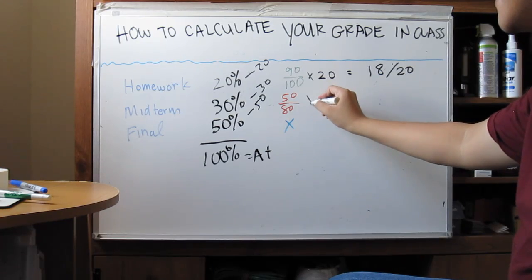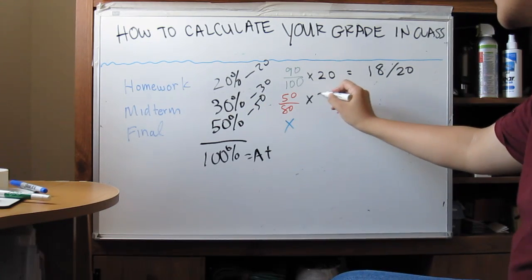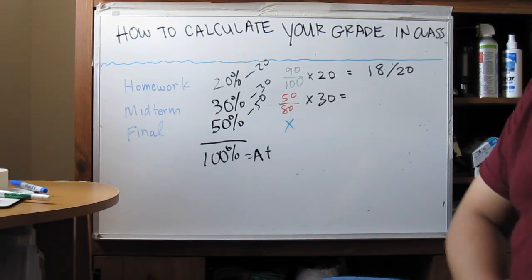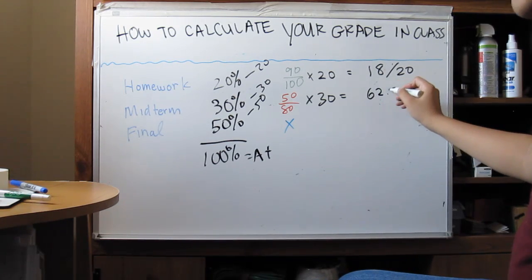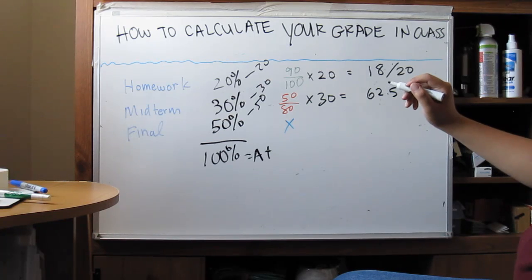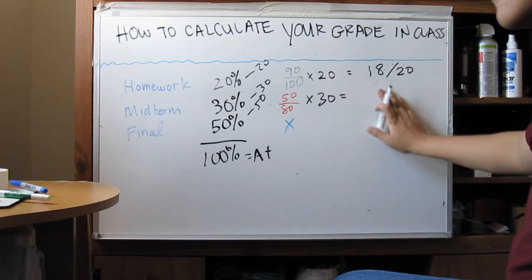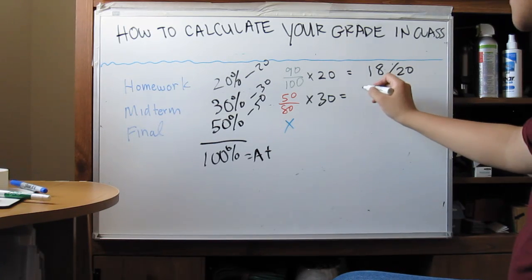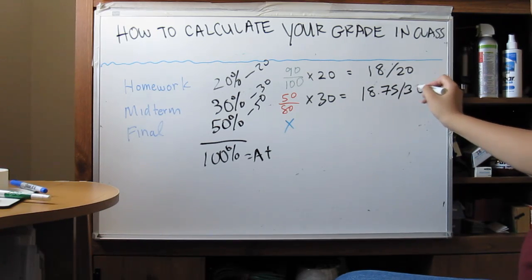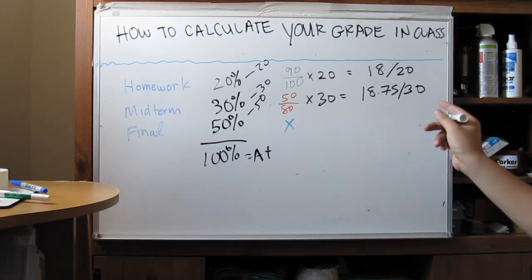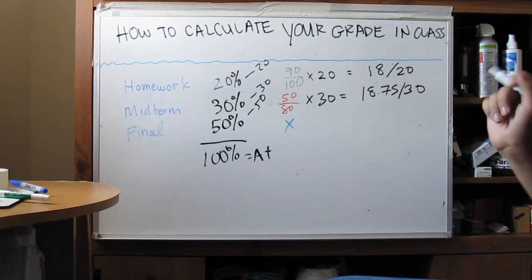And this, 50 out of 80, we're going to multiply it by 30 points, and we're going to get 18.75 out of 30. So that's a little bit troublesome. Okay, that's not a good thing.